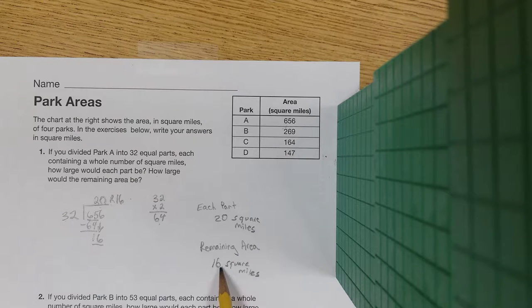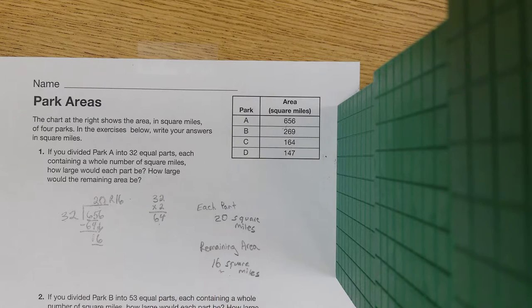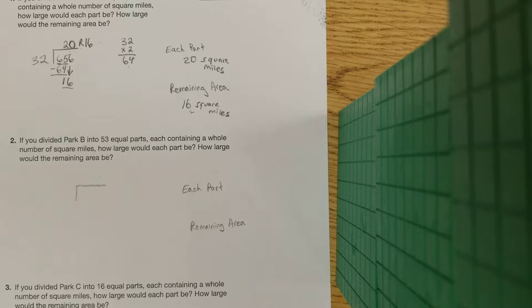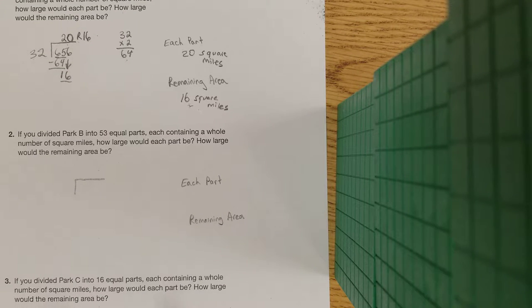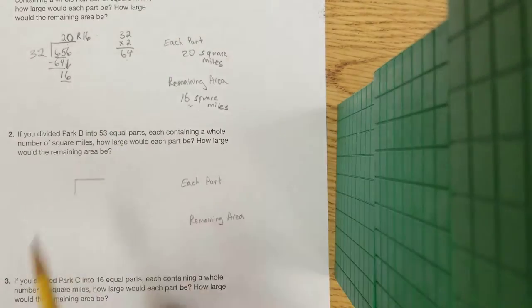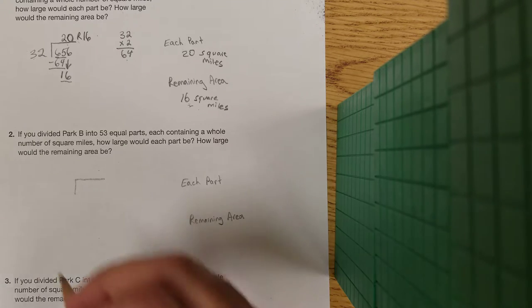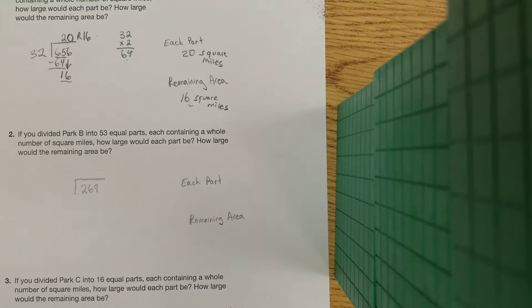The reason why it's a remainder, well we needed 32 square miles to make that next whole, we only had 16, so we didn't have enough to make another one. Okay, for number two we're splitting Park B into 53 equal parts. I can't see it, but up at the top it says Park B is 269 square miles, so that's going to be our big piece that we're starting with, and then we are splitting into 53 pieces.